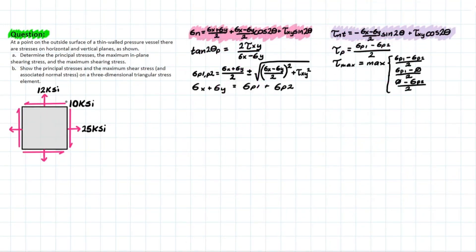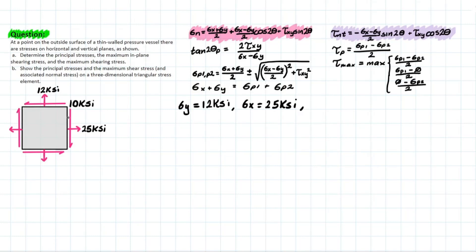Let's hop into the problem and identify the forces on the stress element. We have sigma_y, which is positive since it's acting upwards — 12 ksi. We have sigma_x, which is also positive — 25 ksi. These values are positive based on our coordinate system. We also have 10 ksi for the shear stress, which is negative because it's facing the opposite direction from positive x, leaving us with negative 10 ksi.